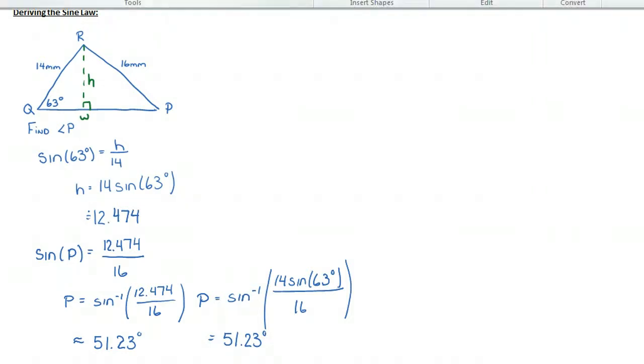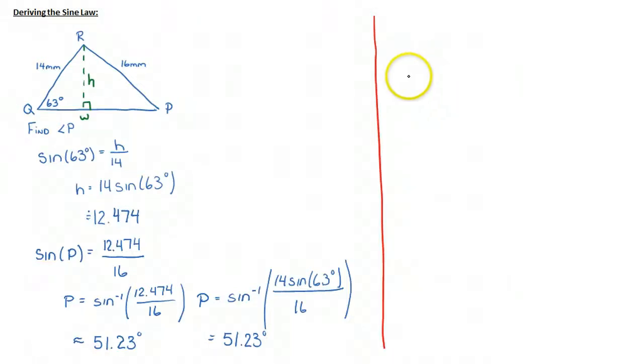So this is a process we can always follow if we were to get a problem like this. But what happens is as people do problems a number of times, they want to come up with called a general representation and hopefully find a formula about that. So let's draw out a triangle here, which is similar, but has no values on it.